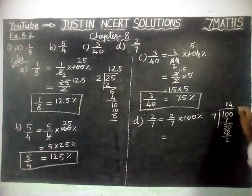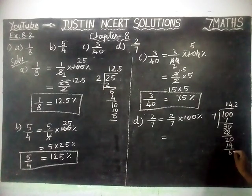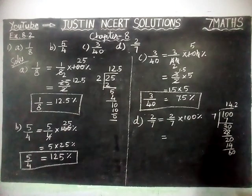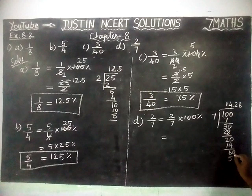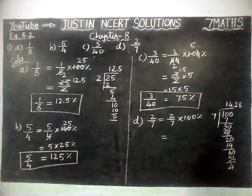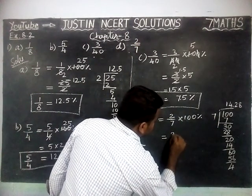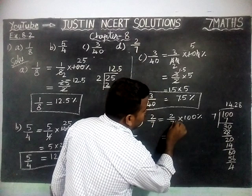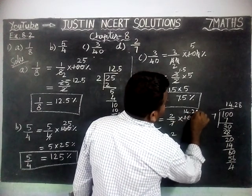We are making a decimal point. Now this is 20. In 20, 2 sevens are 14, remaining 6. Now 60. In 60, 8 sevens are 56, remaining 4. We can stop at 2 decimal steps — that is enough. When we simplify, we got 14.28.